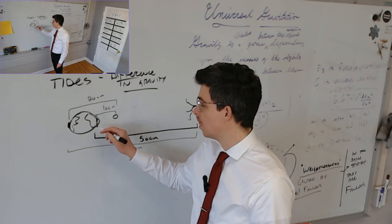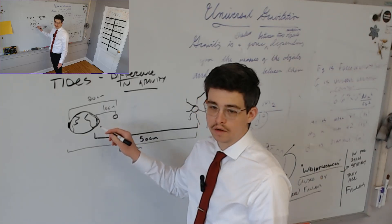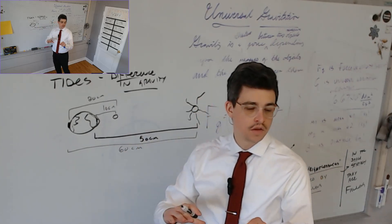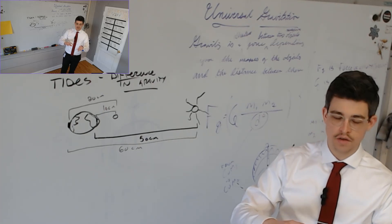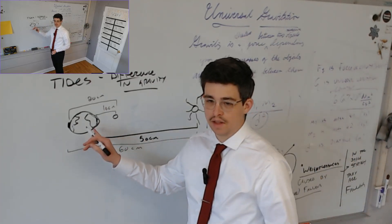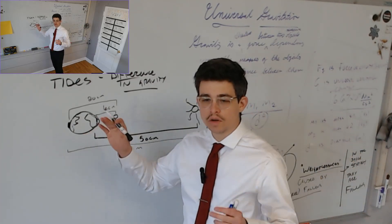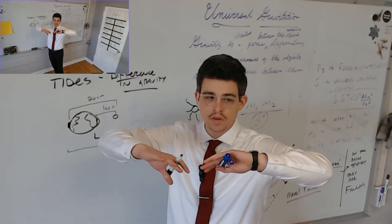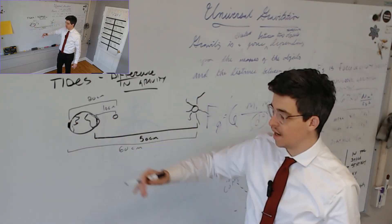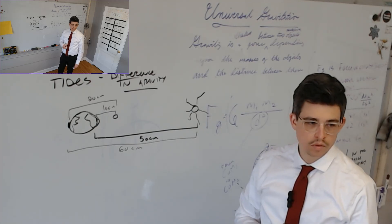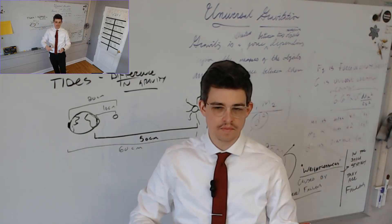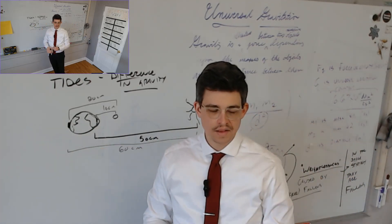Tides don't just happen in the water — we notice them in the water because the land is more rigid. The tide also happens in the land, but since everything raises and lowers together, you don't notice it. Both the land and the water rise and lower according to the tides.